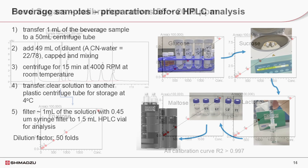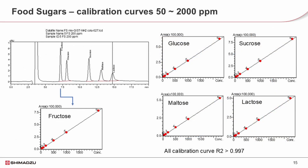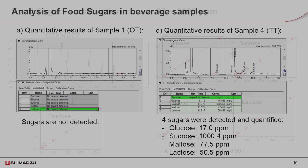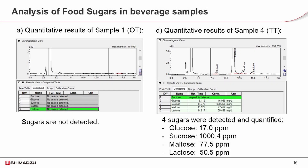The five sugars are well separated and detected using a Shimpac amino column and RID detector. Linear calibration curves of the five sugars were established for a concentration range from 50 ppm to 2,000 ppm. The quantitative results of sugars in the four samples are determined using this HPLC RID method. In sample 1, oolong tea, no sugar was detected, which is the same as the label.